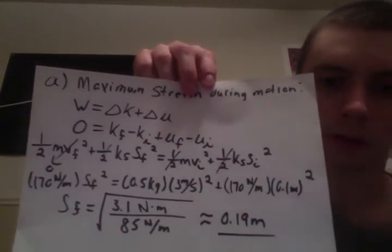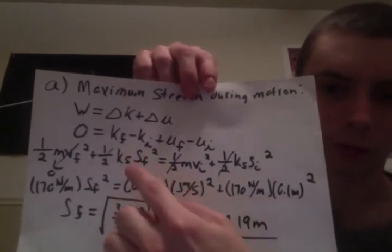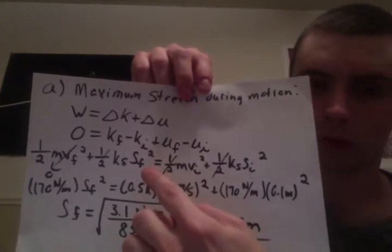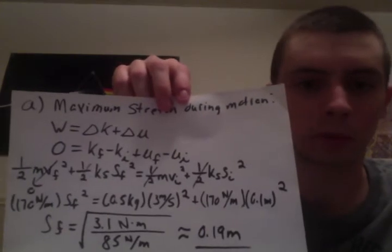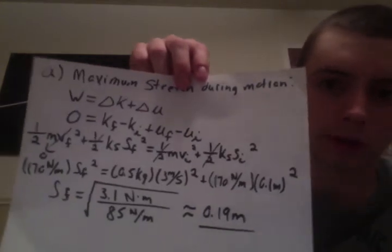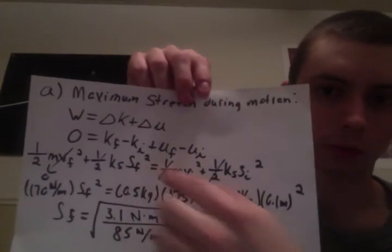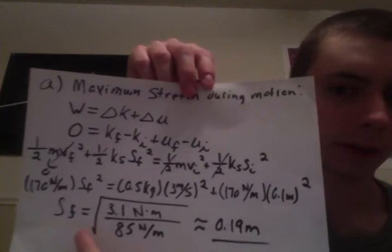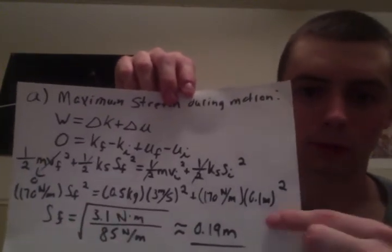We plugged in the corresponding values. K subscript S is the stiffness, the S is the amount compressed or stretched from the equilibrium point. In this case, we're looking for the final stretch. When you algebraically isolate the final stretch, I got this answer in meters.